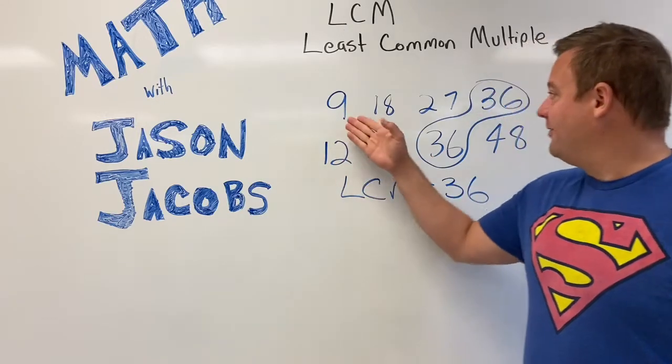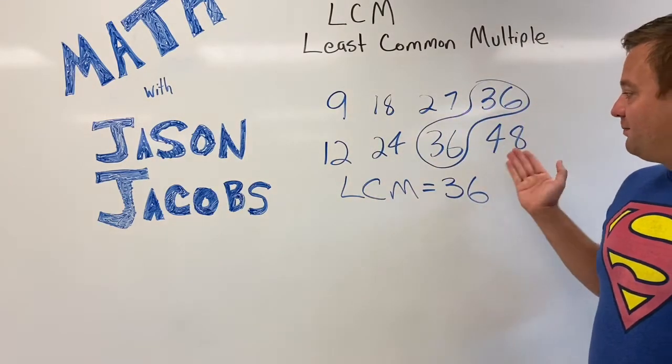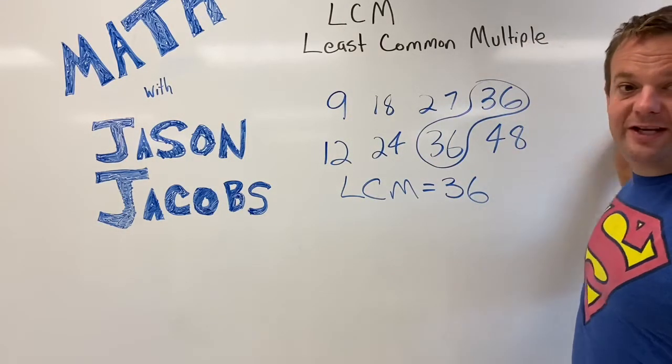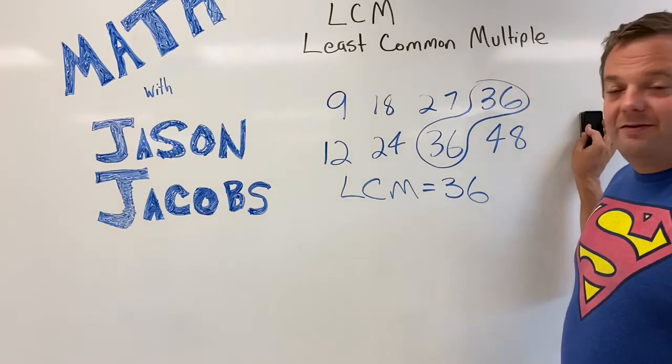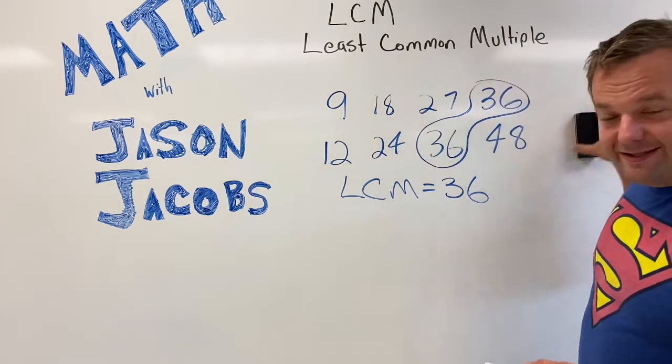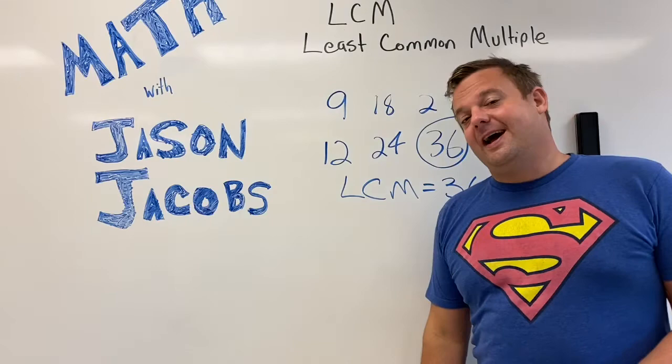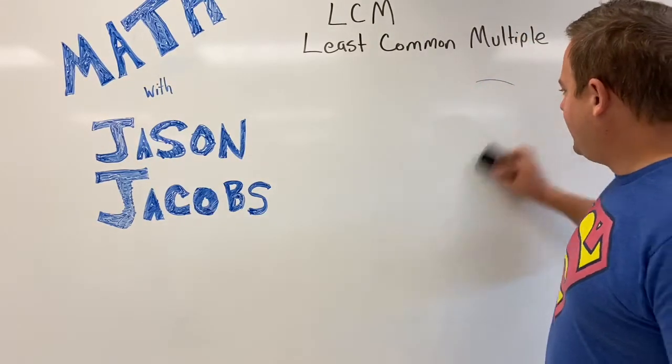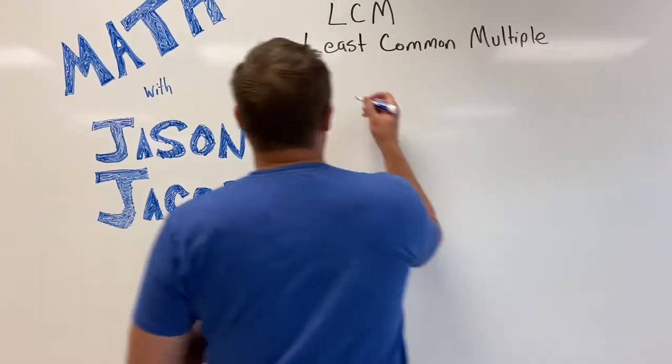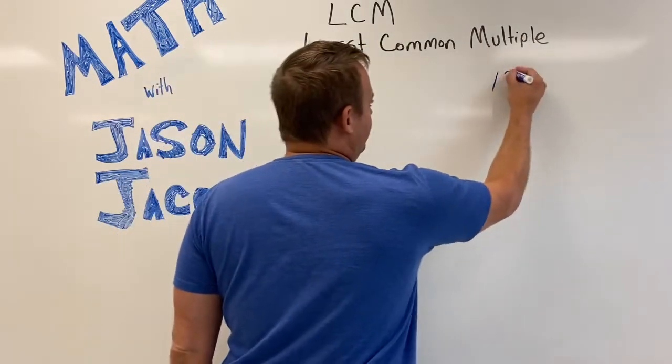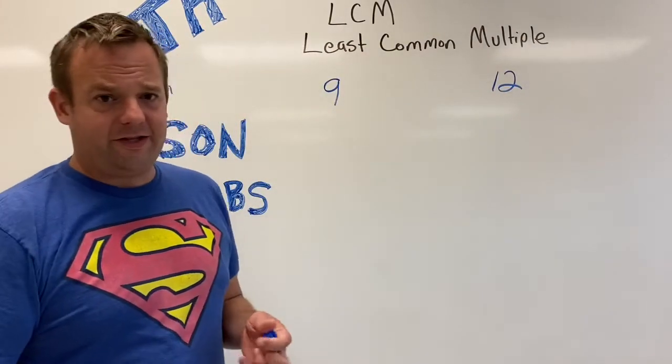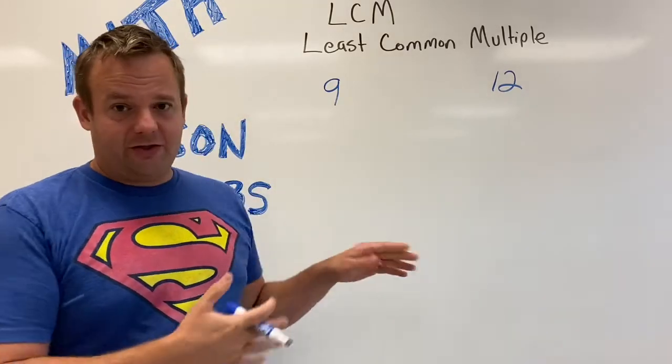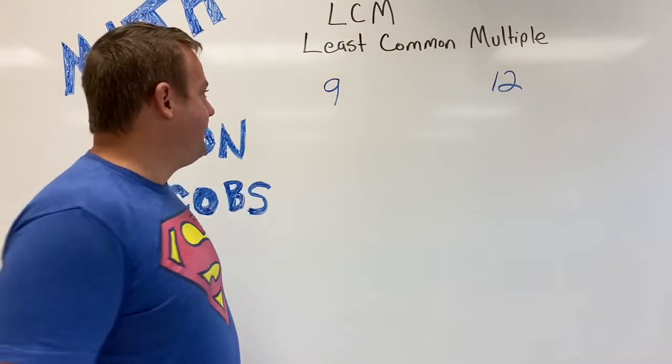But what happens when the numbers get larger? Well, there is an easier method so you're not listing these on forever, and that is using prime factorization. I'm going to show that now to you guys. So I'm going to find the prime factorization of 9 and 12. We already know the least common multiple is 36, but we're going to use an easy example like this to show you the process of how to do it.